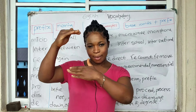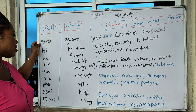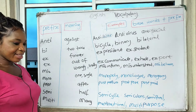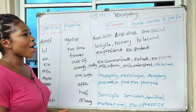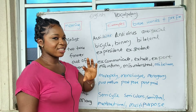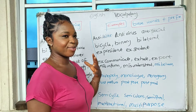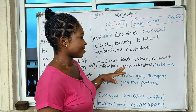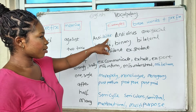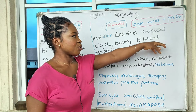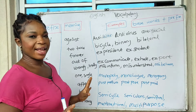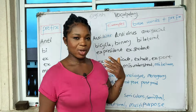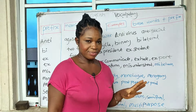'Anti' simply means against. Anything that is against something is 'anti.' If you are against social clubs, you are anti-social clubs. We have 'anti-war,' 'anti-virus,' 'anti-social.' We also have 'anti-cult' — people who are against cultism in society.